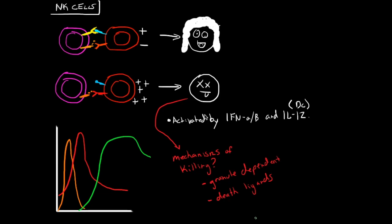In this video I'm going to talk about natural killer cells. Natural killer cells play a huge role in the innate immune response. They are non-specific cytotoxic effector cells, and they comprise about 10 percent of our blood leukocytes. They provide the early defense against viruses and cancer cells.